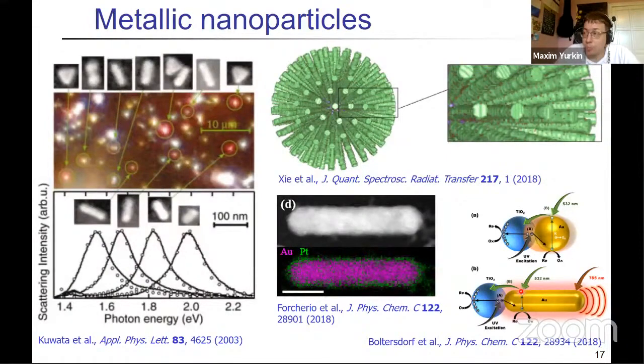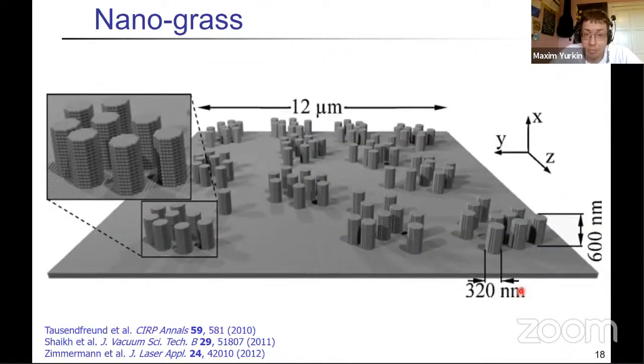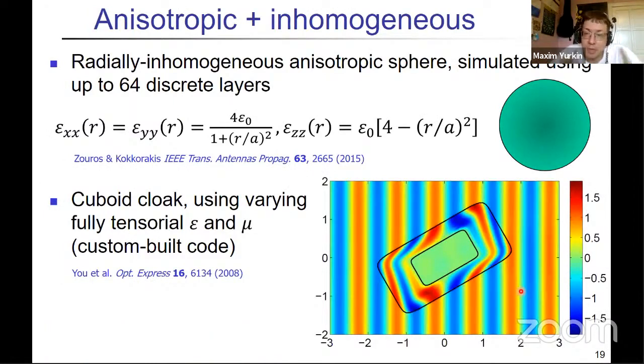As soon as the more complicated geometry you have, the more you are inclined to use DDA because it's rather simple to put any shape into it. And that's just another example. You can call it like a multi-scale system. You can even go to some more complicated, like anisotropic and inhomogeneous particles. So, for example, here you have anisotropic dielectric constant which changes with particle radius. So, here the DDA was used for a reference. And here another example where both tensorial epsilon and mu were used, but for that you need a custom-built code because most of the DDA research is focused on non-magnetic materials.